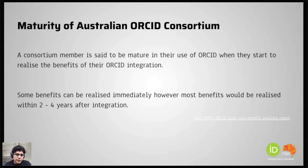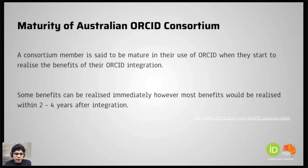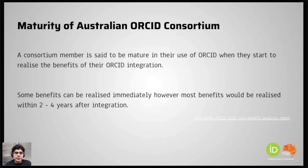Based on the discussions that we've had internally, we decided that a consortium member is mature in their use of ORCID ID when they start to realize the benefits of the ORCID integration. So it's not just enough to have done an ORCID integration, but you also need to realize the benefits of that ORCID integration. Now, if you go by the JISC-ARMA cost-benefit analysis report done when ORCID was piloted in the UK, one of the things the report indicated was that most benefits would be realized within two to four years post-integration. So maybe the best time to assess maturity would be two to four years after an integration is done.